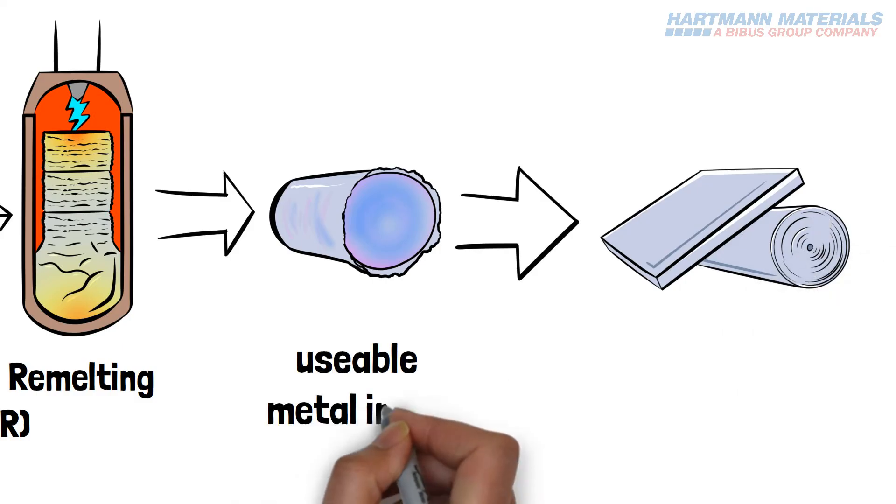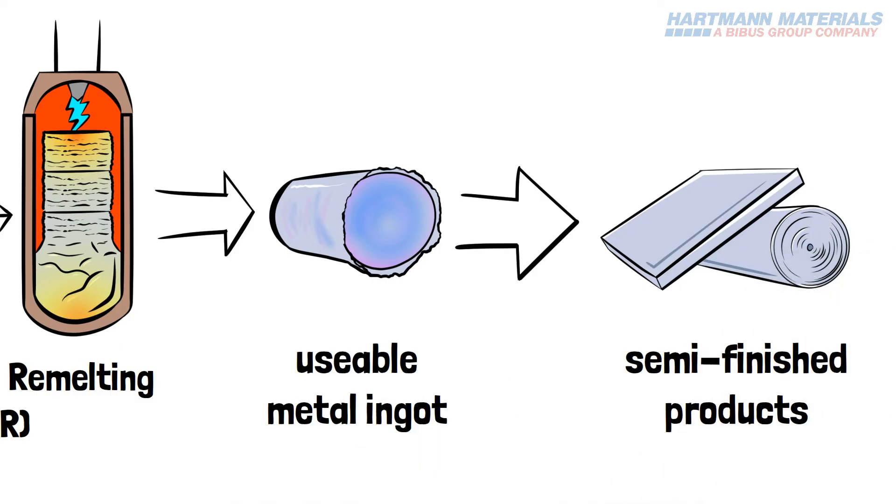Now we have a usable metal ingot for mill processing to semi-finished products.